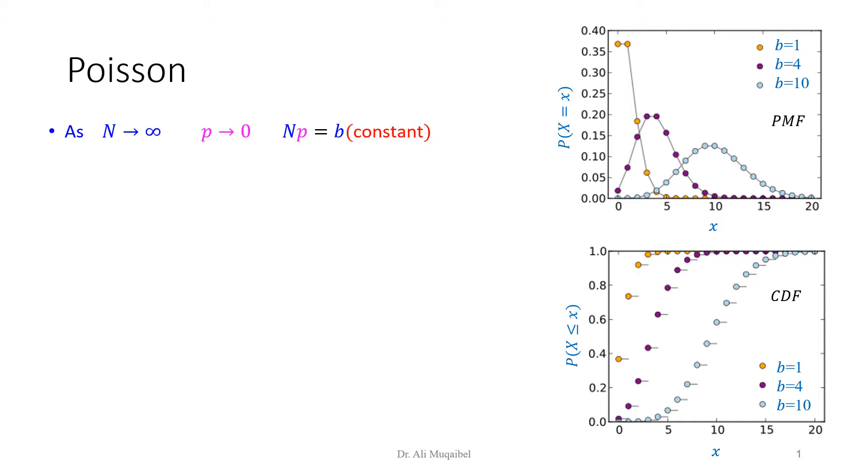Now we're just exposing you to different types of random variables. For n very large, Poisson comes from binomial, they're related. If we make n very large and the probability of occurrence approaches 0, we keep n times p constant equal to b. Later on we'll explain the physical sense. We get the binomial becomes Poisson.